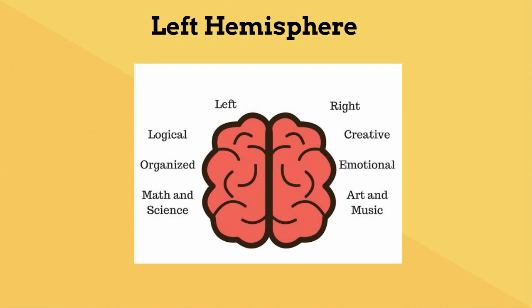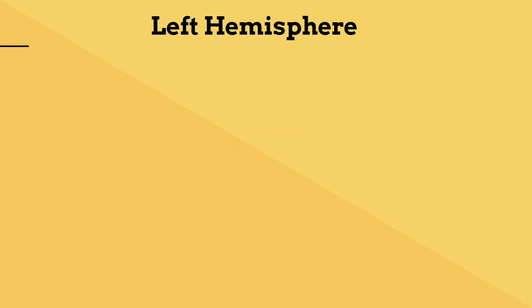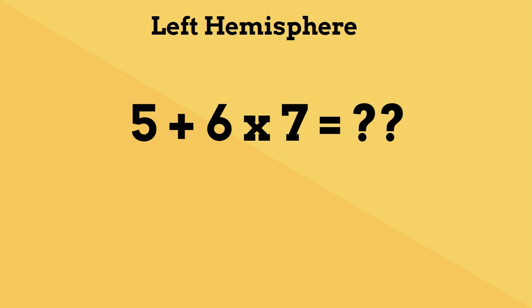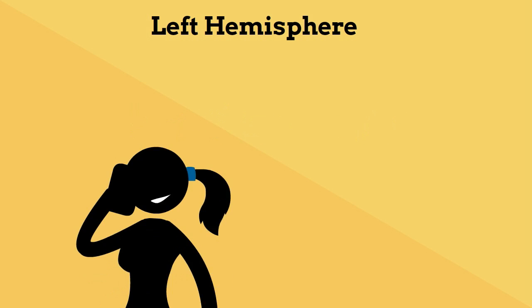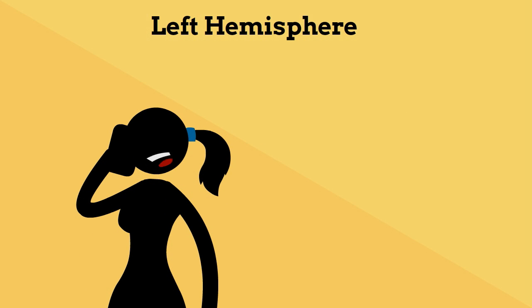The left hemisphere is more logical and performs exact math and science computation problems. In addition, the left side of your brain handles many of the duties of speaking and pulls facts from your memory.